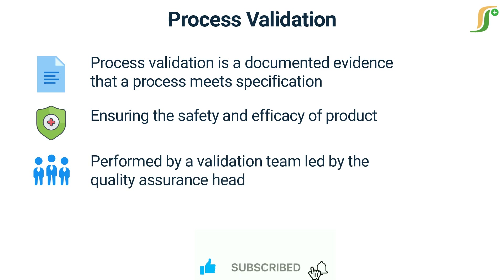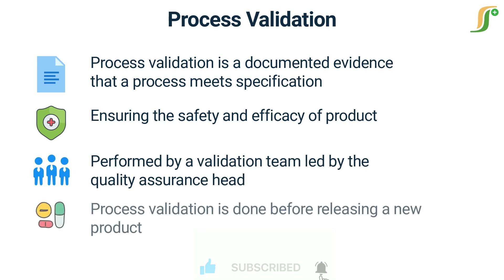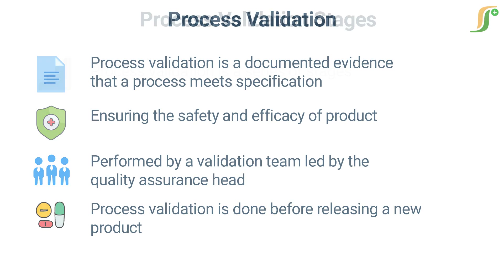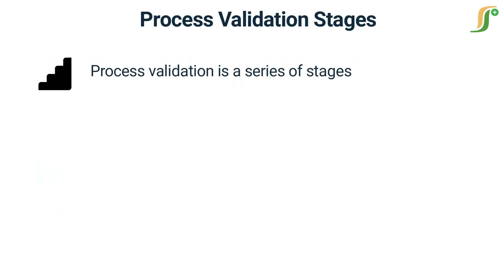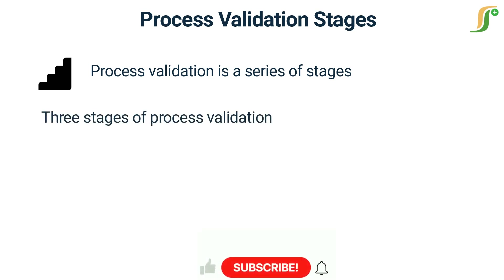Generally, process validation is done before releasing a new product, when applying any change to an existing product, and for periodically verifying the process. The process validation process involves a series of stages, each of which plays an essential role in ensuring that pharmaceutical products are safe and effective. In this video, we will explore the three stages of process validation in pharmaceuticals in more detail.